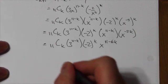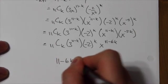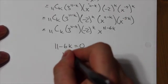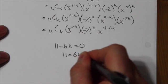Right now, the exponent is 11-6k. So what I need is for this to be equal to 0. So I bring that over. 11 = 6k. Divide. And that is a bizarre result.